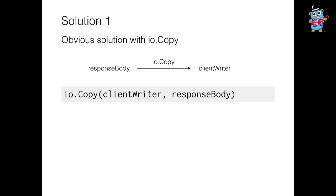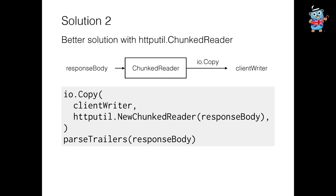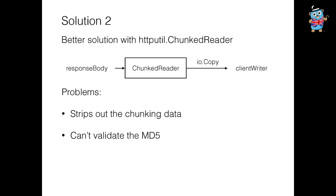Let's start with the obvious solution: just copy the response body — forward that byte stream straight to the client. It has a couple of problems: it won't let us process the trailer separately, and it won't stop after the body. We can dig around the standard library and find something called an http/internal chunked reader. It's a bit like the gzip reader — it transparently removes all the chunk framing and gives us one stream. That probably works for most use cases, but it strips out the chunking data, so our JSON objects won't align with chunks anymore.